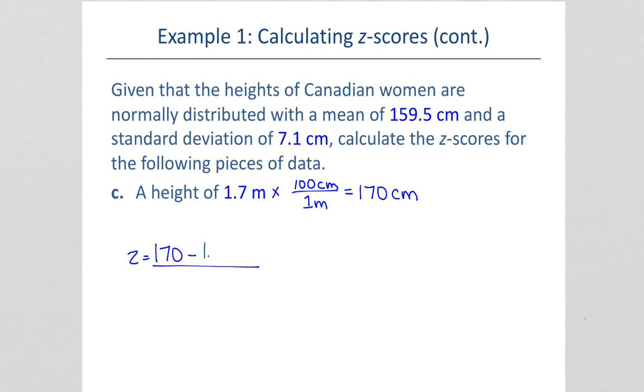Subtract the mean, divide by the standard deviation, we get 1.48. This person's height is 1.48 standard deviations above the mean. So, definitely taller than average.